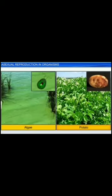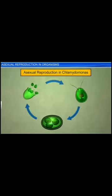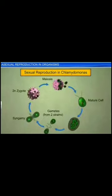Apart from single-celled organisms and animals, asexual reproduction is also seen in simple plants such as algae, as well as in certain higher plants such as potato. For instance, Chlamydomonas, a type of algae, develops zoospores which later mature into new plants. However, during unfavorable conditions, Chlamydomonas, as well as other types of fungi and algae, undergo sexual reproduction.